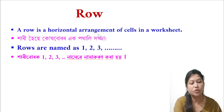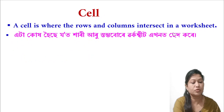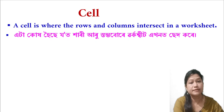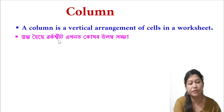A row is a horizontal arrangement of cells in a worksheet. A cell is where the rows and columns intersect in a worksheet. A column is a vertical arrangement of cells in a worksheet. The worksheet is organized where cells are arranged and displayed.